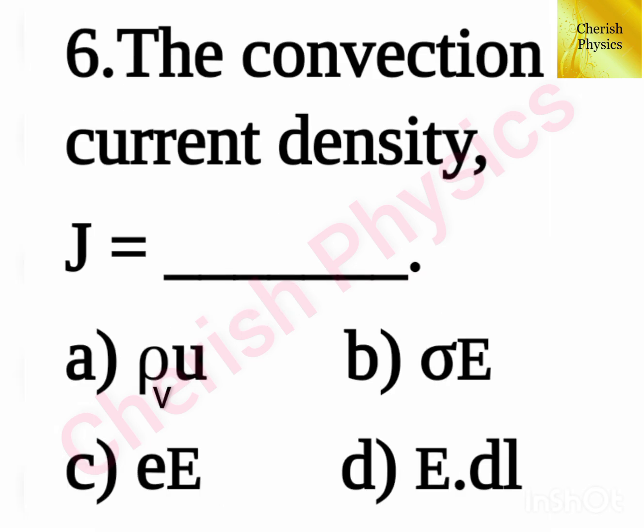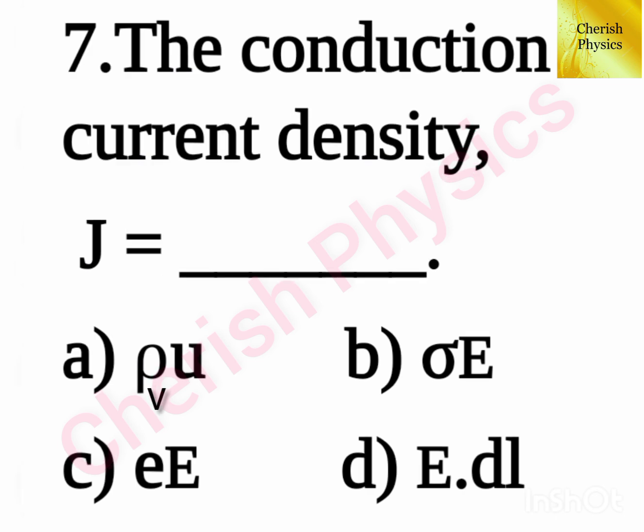The convection current density j is equal to — The conduction current density j is equal to —